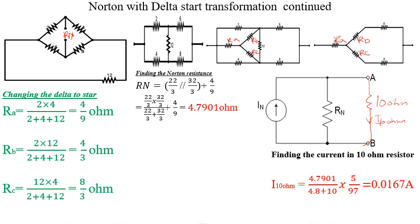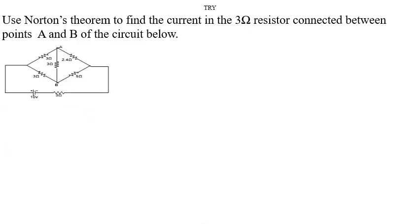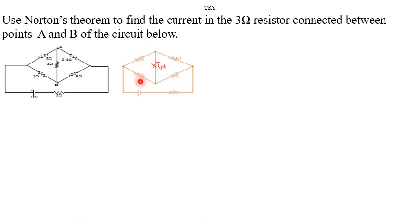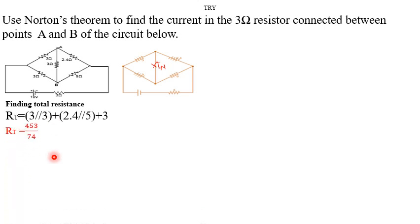Now I will give you a trial assignment question. The question says: use Norton's theorem to find the current through the 3-ohm resistor. The first step is to take the 3-ohm resistor out of the circuit and name the current flowing through it as IN. Then we find the total resistance: 2 and 3 are in parallel, another 3 and 3 are in parallel, and 2.4 and 5 are in parallel — all becoming in series. We get our total resistance from that calculation.